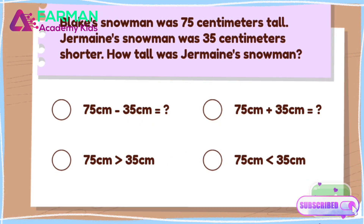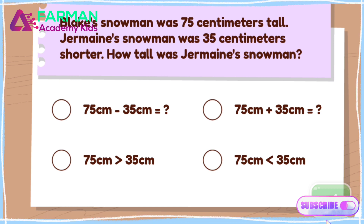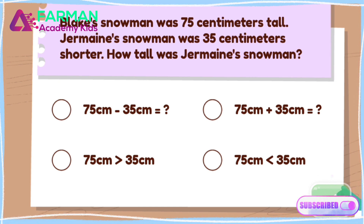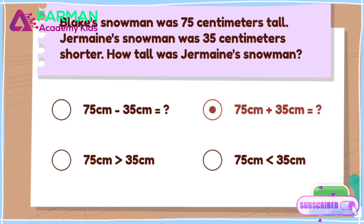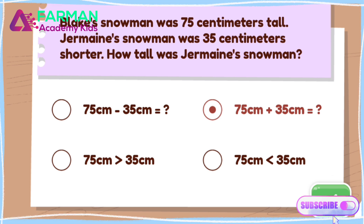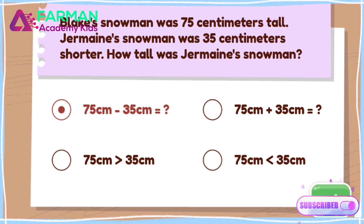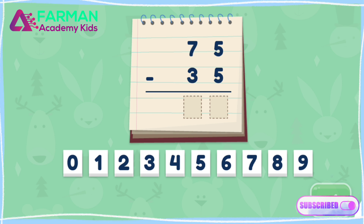Which equation matches the word problem? We want to know how tall Jermaine's snowman was. We'll need to subtract 35 from the height of Blake's snowman. 75 minus 35 reflects the word problem.